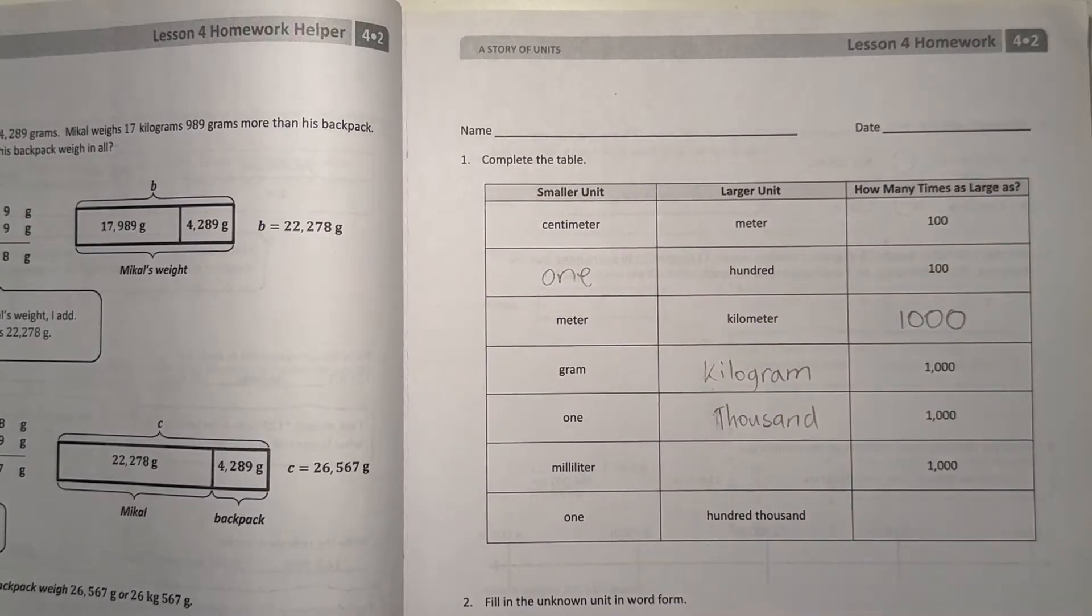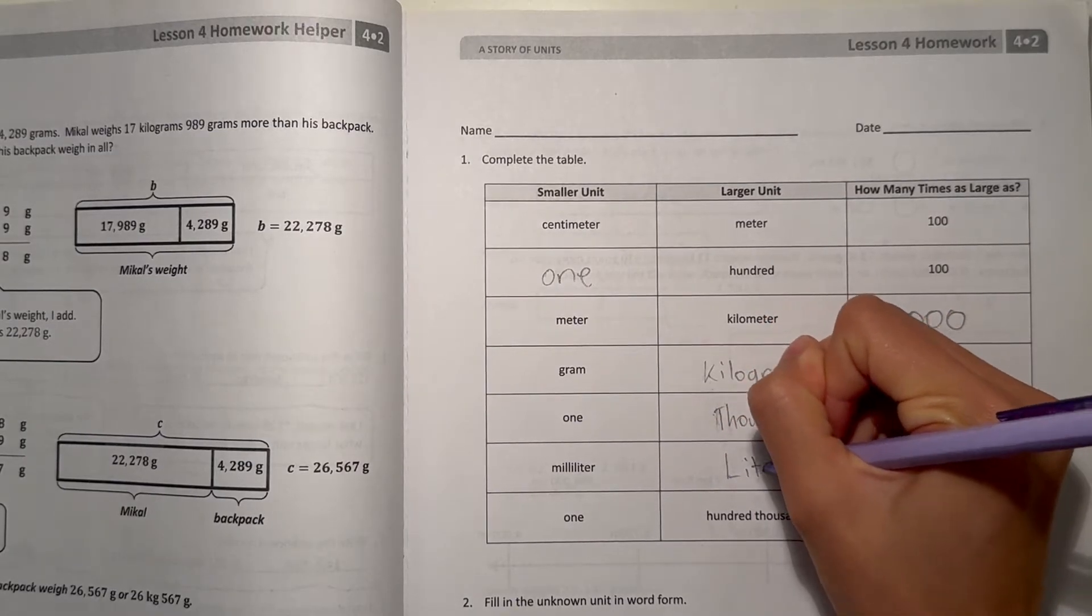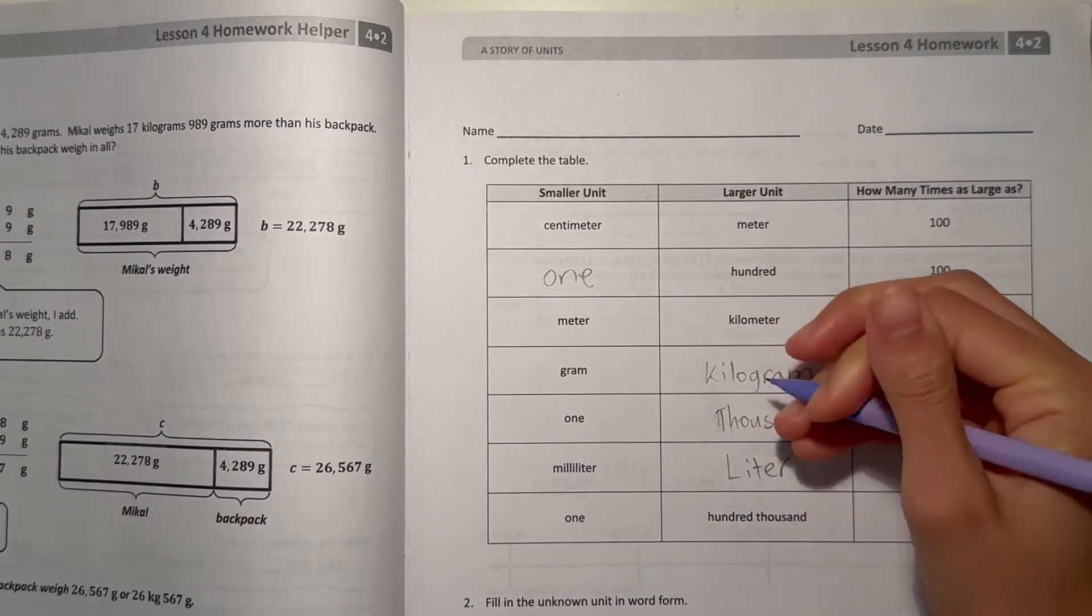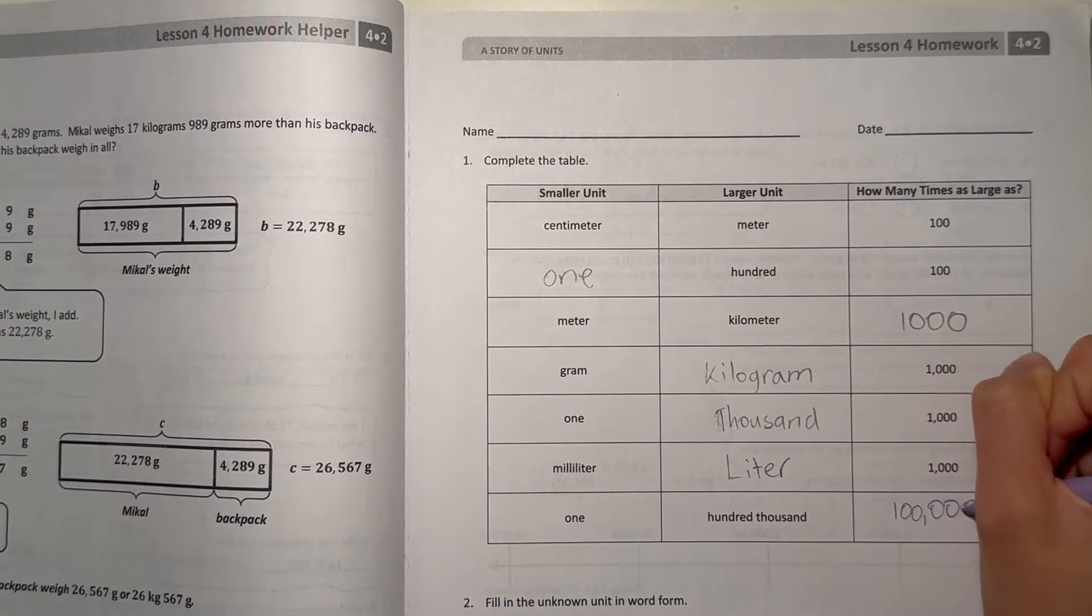And the milliliter, 1,000 times as big, that would be a liter. And for one, 100,000, that's just 1 times 100,000.